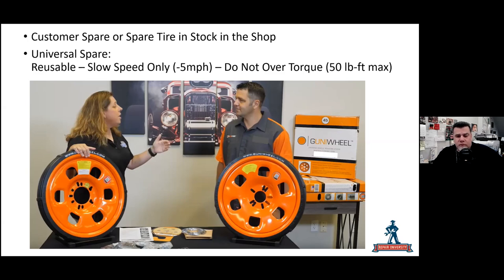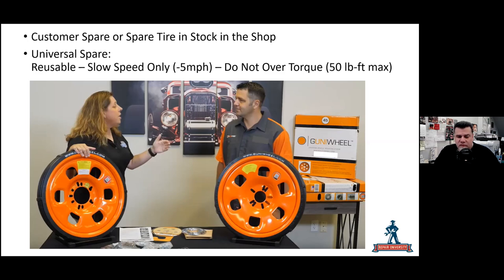Kristen did a video on the Gunny wheel — there are a few different size wheels, basically one for cars and one for SUVs, with a bolt pattern that fits multiple different vehicle bolt patterns. You should have a few in the shop. They're reusable, but you can only go less than five miles per hour — not for test drives. Torque these wheels to no more than 50 foot-pounds. They have built-in speed bumps around the tire that cause the vehicle to shake badly if you try to drive fast — a good safety feature.